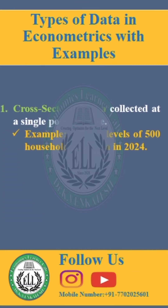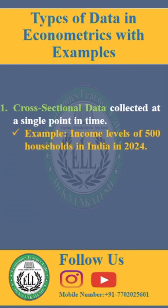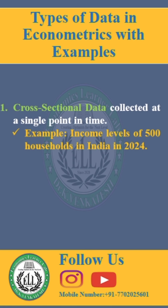The first type is cross-sectional data, collected at a single point in time to analyze the differences across entities. Example: income levels of 500 households in India in 2024.